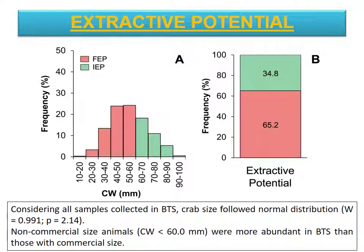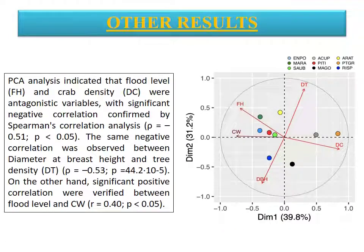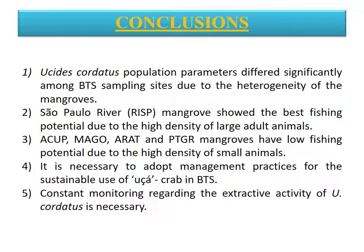Non-commercial size animals were more abundant in the BTS. Our analysis indicated that flood level and crab density were antagonistic variables. The same negative correlation was observed between diameter at breast height and tree density. On the other hand, significant positive correlations were verified between flood level and body size.